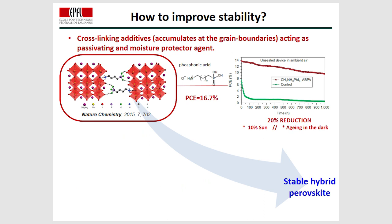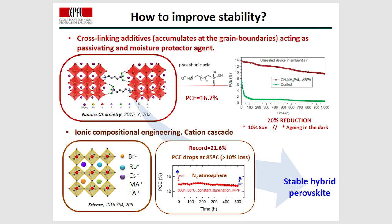Different studies have been published trying to improve the stability of these devices. For example, material stability can be controlled to a certain extent by using cross-linking additives, which accumulate at the grain boundaries, acting as passivation or water-repellent protection agents. Also, ionic compositional engineering has been used to obtain very nice efficiencies with good stability, even if in this case it was in a nitrogen atmosphere.